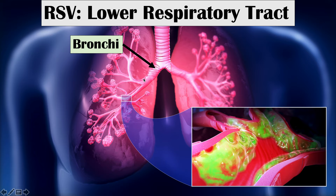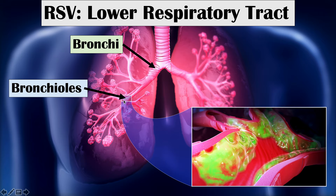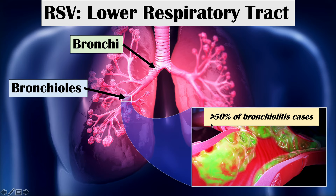The first lower respiratory tract area affected by RSV is the bronchi — RSV can cause bronchitis. Going further in, the bronchioles can be affected, causing bronchiolitis, meaning inflammation of the bronchioles. We can see mucus and a lot of congestion in the bronchioles as they become inflamed. RSV is actually an important cause of bronchiolitis cases.